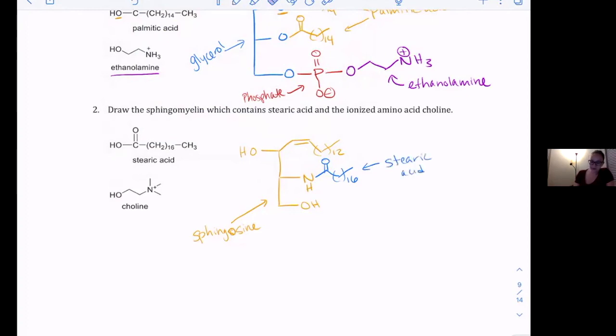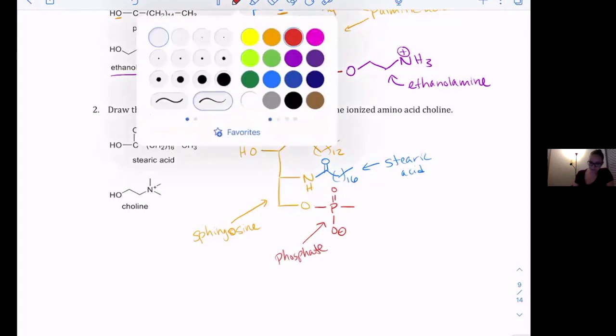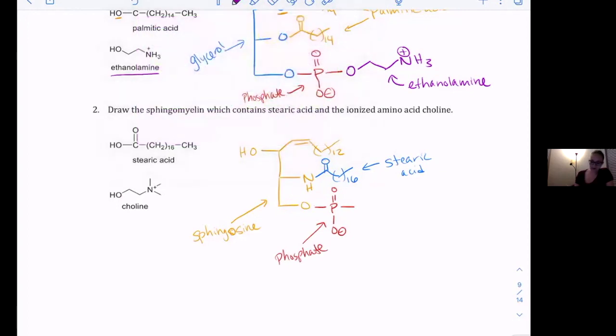And then at the bottom here we're going to erase this hydrogen because we need to put in our phosphate group. And then lastly we have our amino alcohol. In this case we're told that we're going to be using choline, which the structure is over here on the side. So I'm going to go ahead and copy that structure with three methyl groups with a positive charge, and that finishes this up.